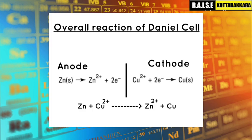Now let's look at the overall reaction. On the left side we have the zinc oxidation half-reaction, and on the right side we have the copper reduction half-reaction. The overall equation gives: Zn + Cu²⁺ → Zn²⁺ + Cu.